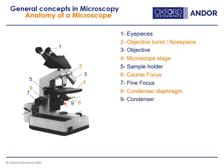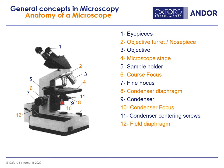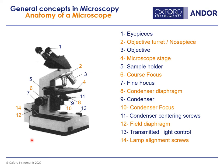The diaphragm of the condenser, and the condenser itself. There's a knob that allows you to focus the condenser, and condenser centering screws. Then the field diaphragm, the transmitted light control, and you can also align the lamp — the alignment controls on the lamp are generally on the back of the microscope.